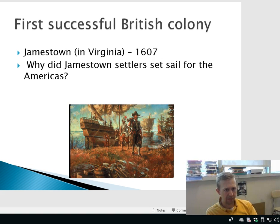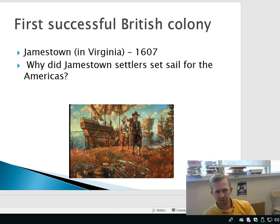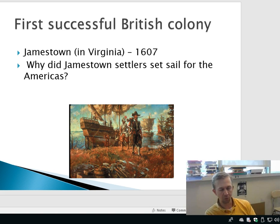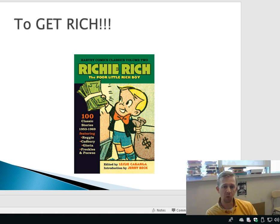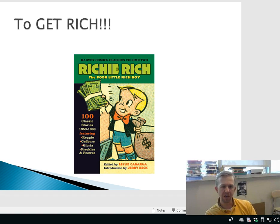The first successful British colony was in Jamestown, 1607, in Virginia. The question is, why did the Jamestown settlers go to the New World? The simple reason was they wanted to get rich. They were looking for gold. They literally thought that once they landed in the New World, no matter what, they would find gold. And as we know, gold is not all over the Americas.